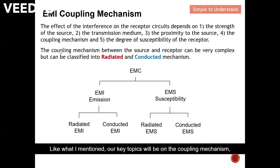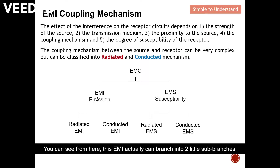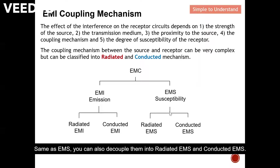Our key topic is the coupling mechanism from source to receiver. While it can be very complex, we can simplify and classify it into radiated and conducted mechanisms. EMI branches into two sub-branches: radiated EMI and conducted EMI. Similarly, EMS can be decoupled into radiated EMS and conducted EMS.